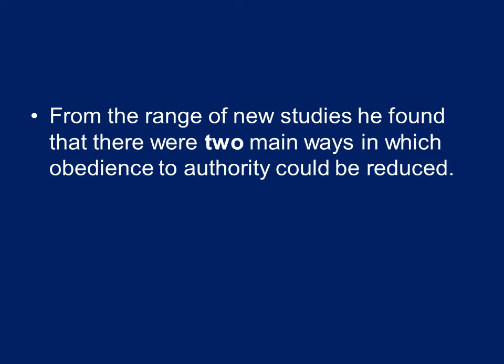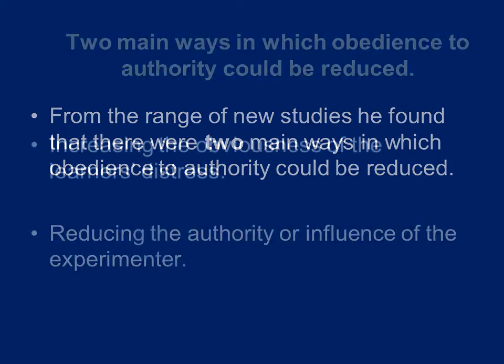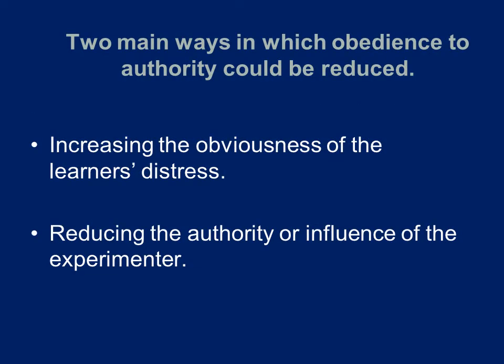Milgram concluded that there were two ways in which obedience to authority could be reduced. First, increasing the obviousness of the learner's distress — being incredibly aware of how distressed the learner is, potentially with the learner in the same room — would decrease obedience levels as measured by the number of volts participants were willing to go to. Second, reducing the authority of the experimenter: removing the lab coat, making him an ordinary person, or changing the environment from the prestigious Yale University.